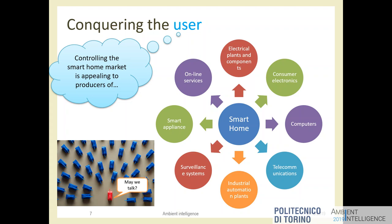Appliance vendors — dishwasher and fridge makers — say smart home is their domain because their products will be in every house anyway, so they'll make them smarter. It's not clear whose domain it is. The smart home is a market — a stronger word than just domain — shared by many different industry segments.